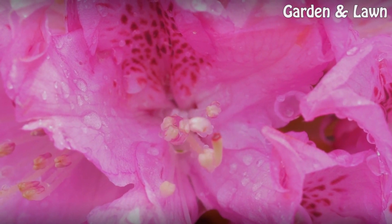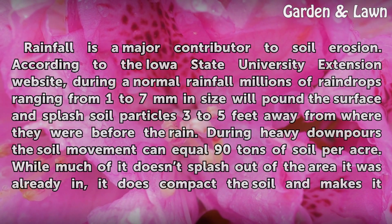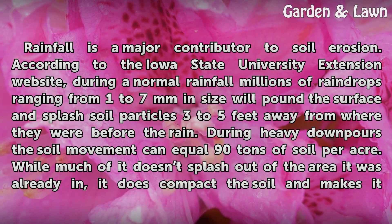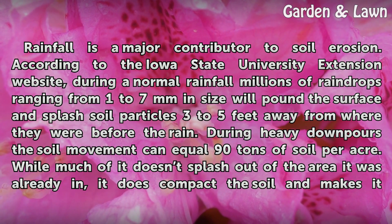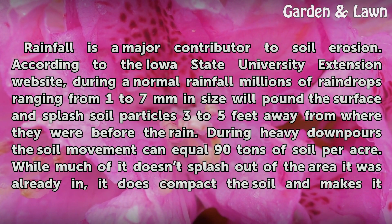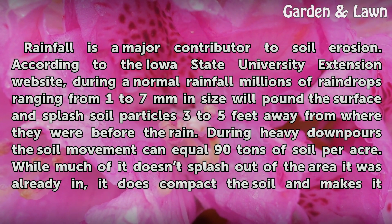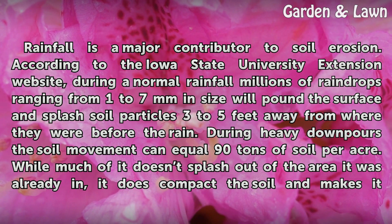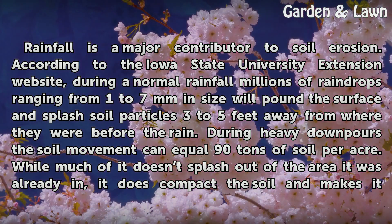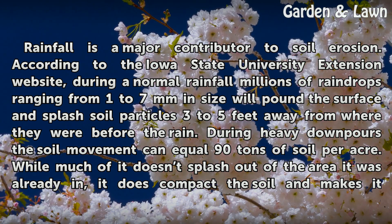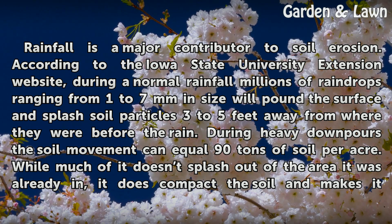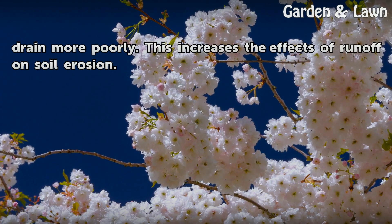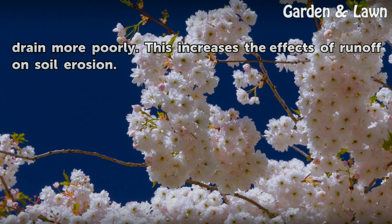Rainfall is a major contributor to soil erosion. According to the Iowa State University Extension website, during a normal rainfall millions of raindrops ranging from one to seven millimeters in size will pound the surface and splash soil particles three to five feet away. During heavy downpours the soil movement can equal 90 tons of soil per acre. While much of it doesn't splash out of the area, it does compact the soil and makes it drain more poorly, which increases the effects of runoff on soil erosion.